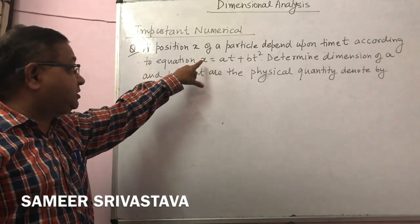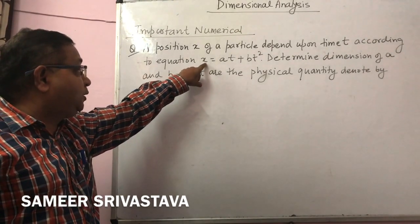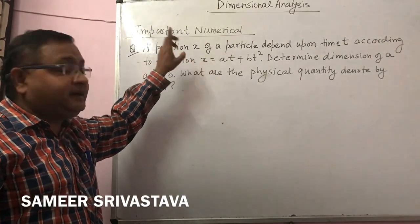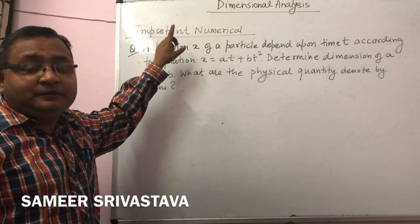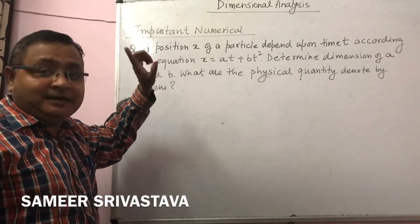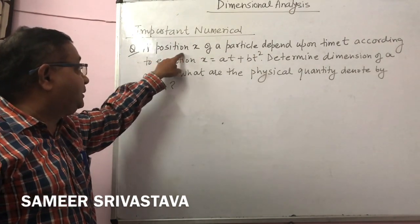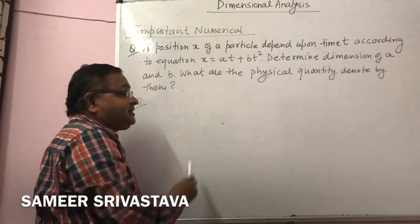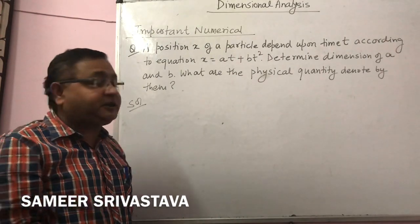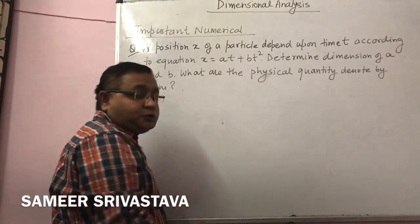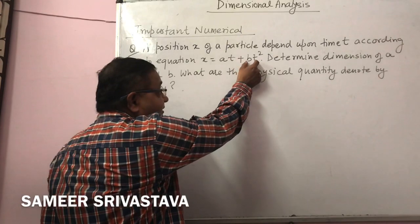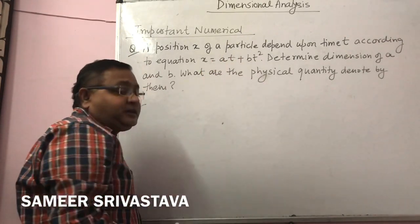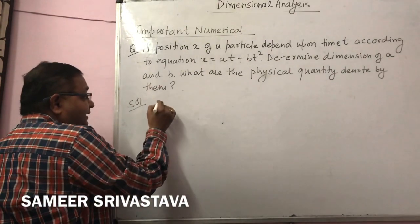In this question, x represents position, so the dimension of x is L. From this equation, if x has dimension L, then according to the principle of correctness of equations, each term on the right-hand side will also have dimension L or position.